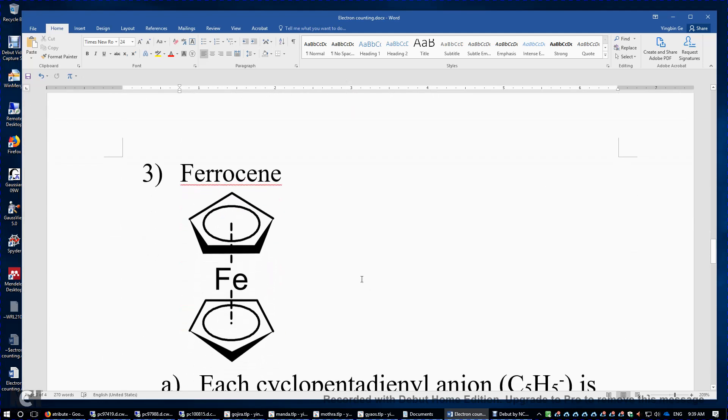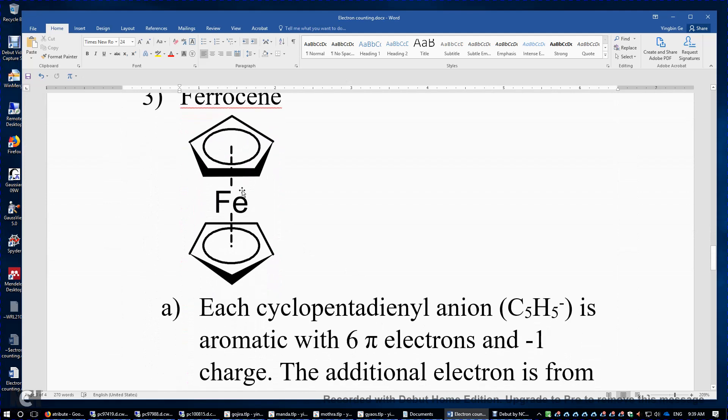The third example is a bit difficult. It's called ferrocene. And this iron is sandwiched by two cyclopentadienyl anions. These two are actually aromatic because you have two double bonds. That's 4 pi electrons. And then the fifth carbon has a p-orbital being occupied by two electrons.